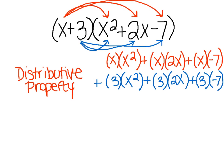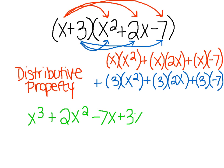Now if we start to simplify: x times x squared is x cubed, x times 2x is 2x squared, and x times negative 7 is negative 7x. Then we have 3 times x squared which is 3x squared, 3 times 2x which is 6x, and 3 times negative 7 which is negative 21.